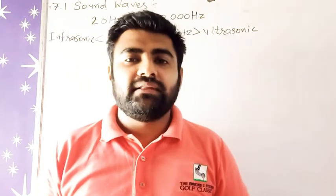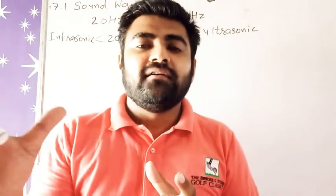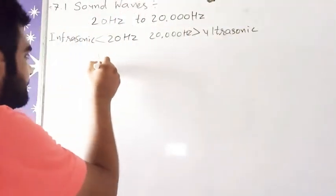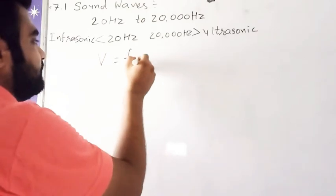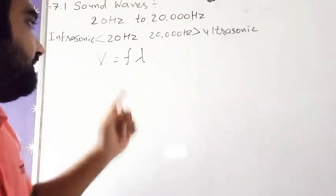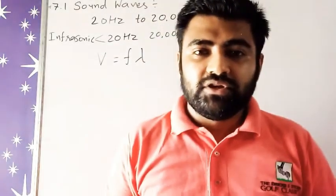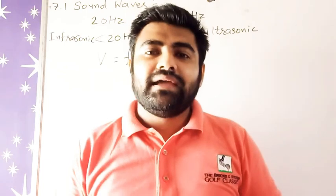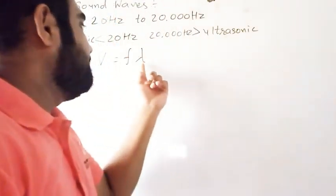Now let's talk about velocity. Since we have waves, they travel at some velocity through a medium. The velocity formula inside a medium — if air is the medium — is v = f × λ. Here f is frequency and λ (lambda) is wavelength. The distance traveled by the wave per one cycle is called wavelength.